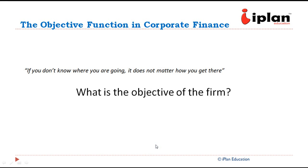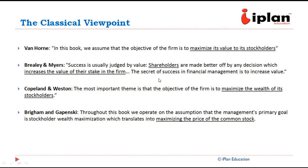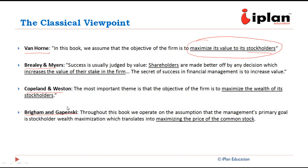Let us look at the objective function in corporate finance. What is the main objective of the firm? If we look at the classical viewpoint, they mostly focus on maximizing the value to the stockholders or shareholders. Van Horn, Brillet and Myers, Copeland and Weston, Brigham and Gapinski — all of them have talked about maximizing the stockholder wealth, which later translates into maximizing the share price.